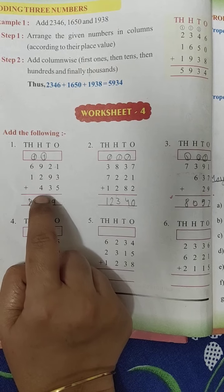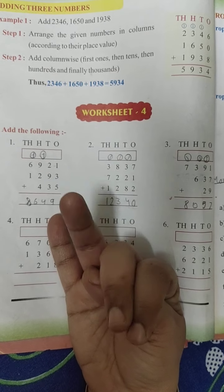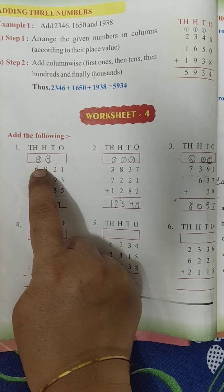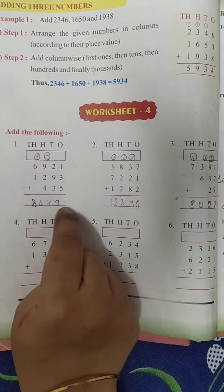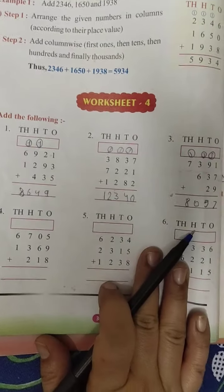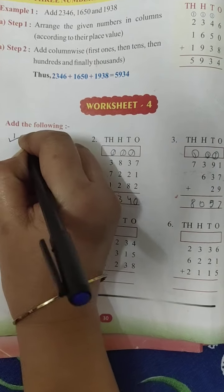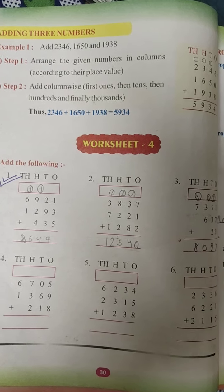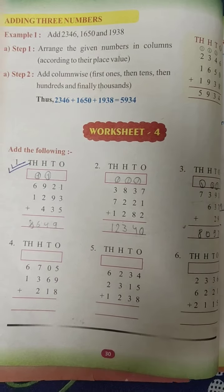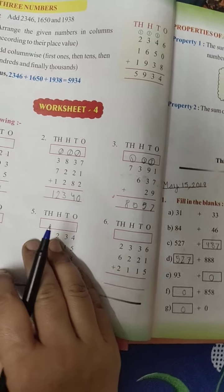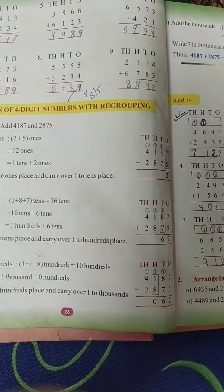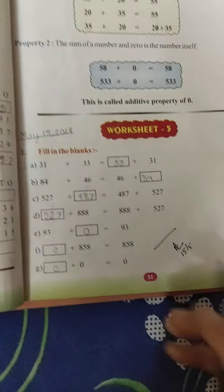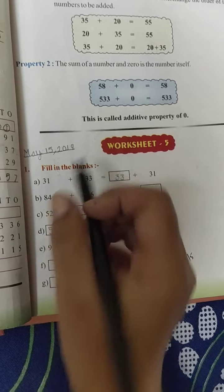And two is twelve. In twelve, add four more: 13, 14, 15, and 16. Write 6 here. One carry. Six and one is seven, and one is eight. This is my answer. You will do this worksheet also, then ask your parents to check it. Today's homework is worksheet 2, 3, and 4. You will do worksheets 2, 3, 4 in your book.